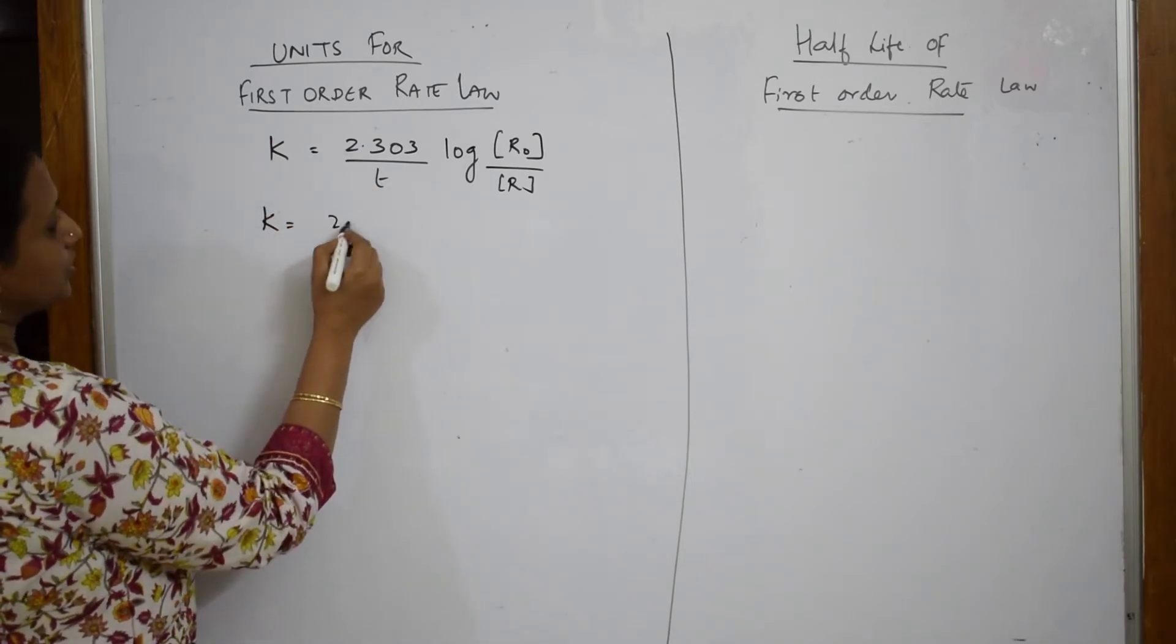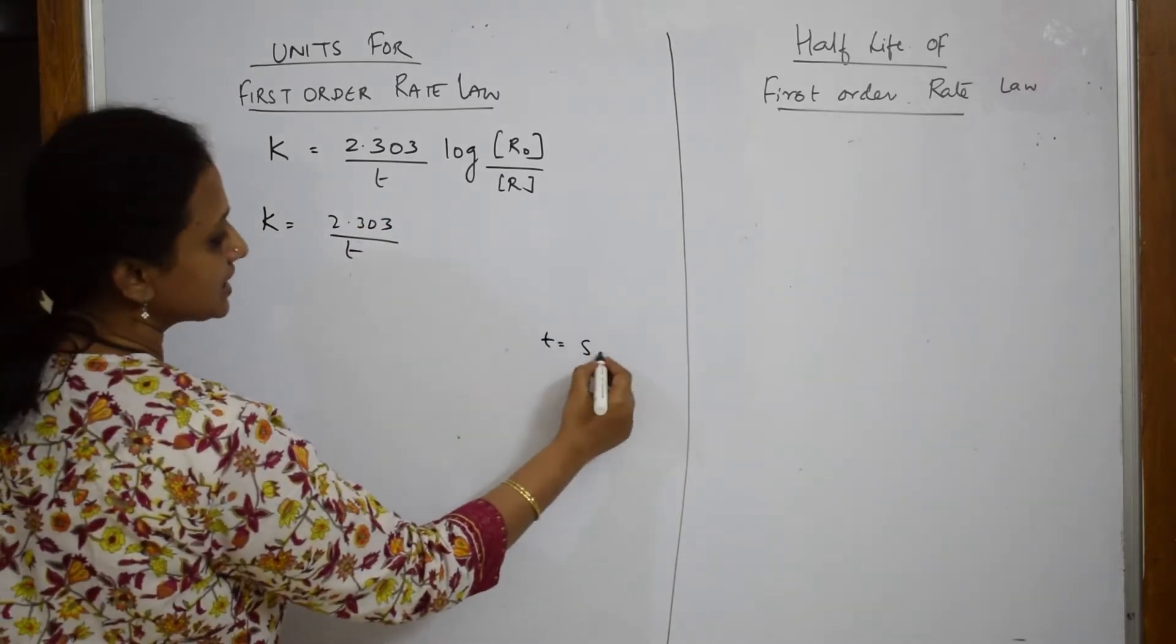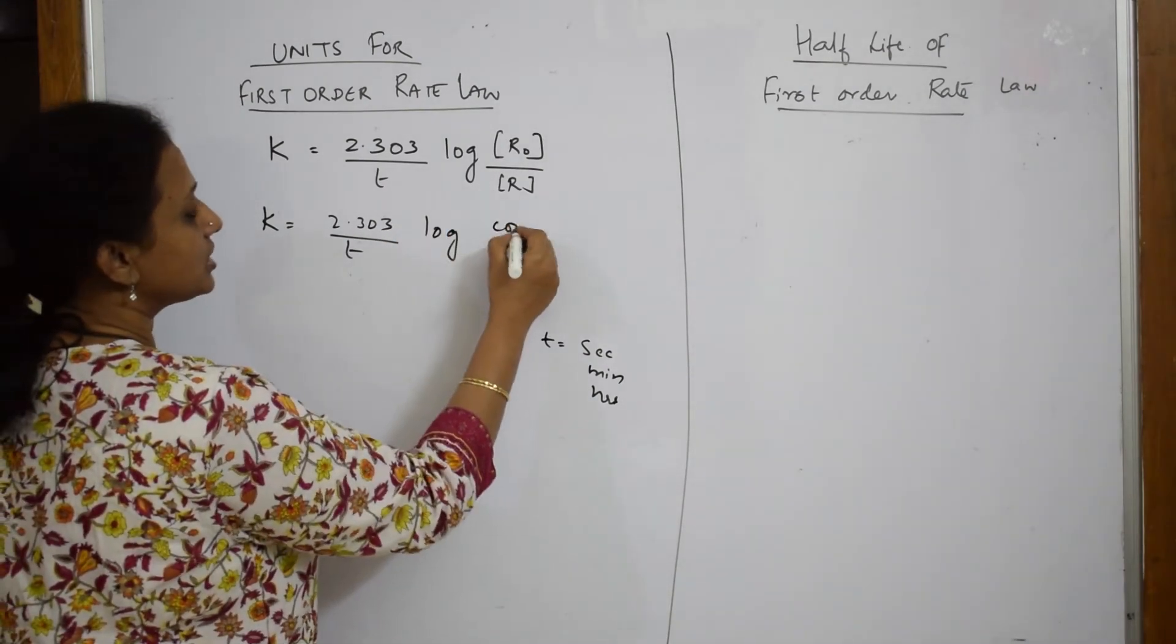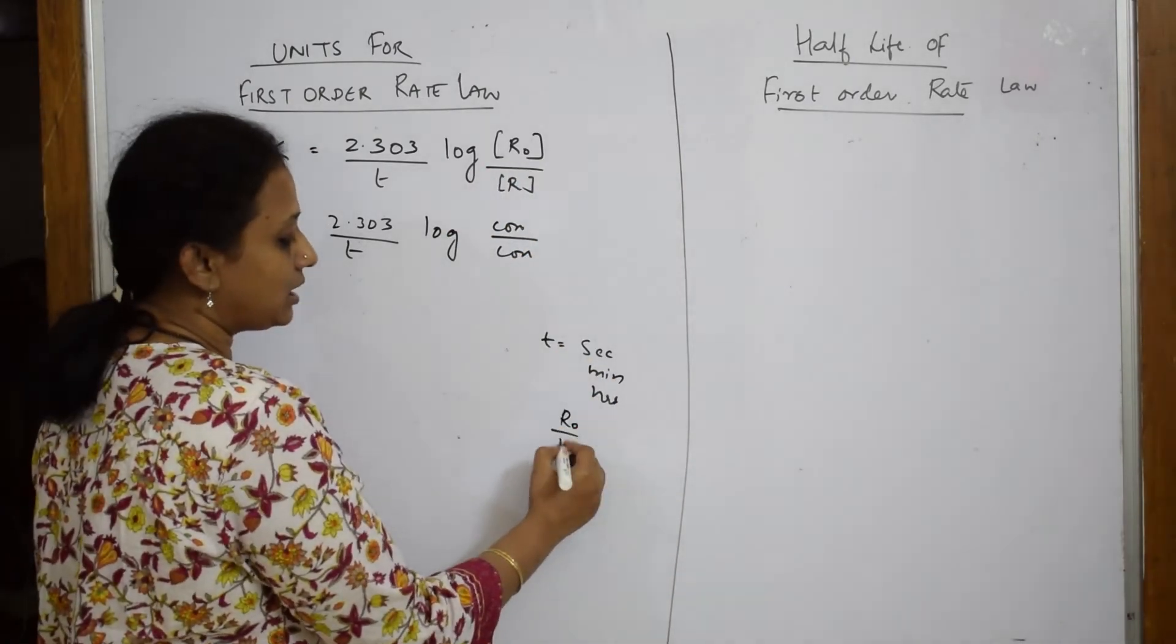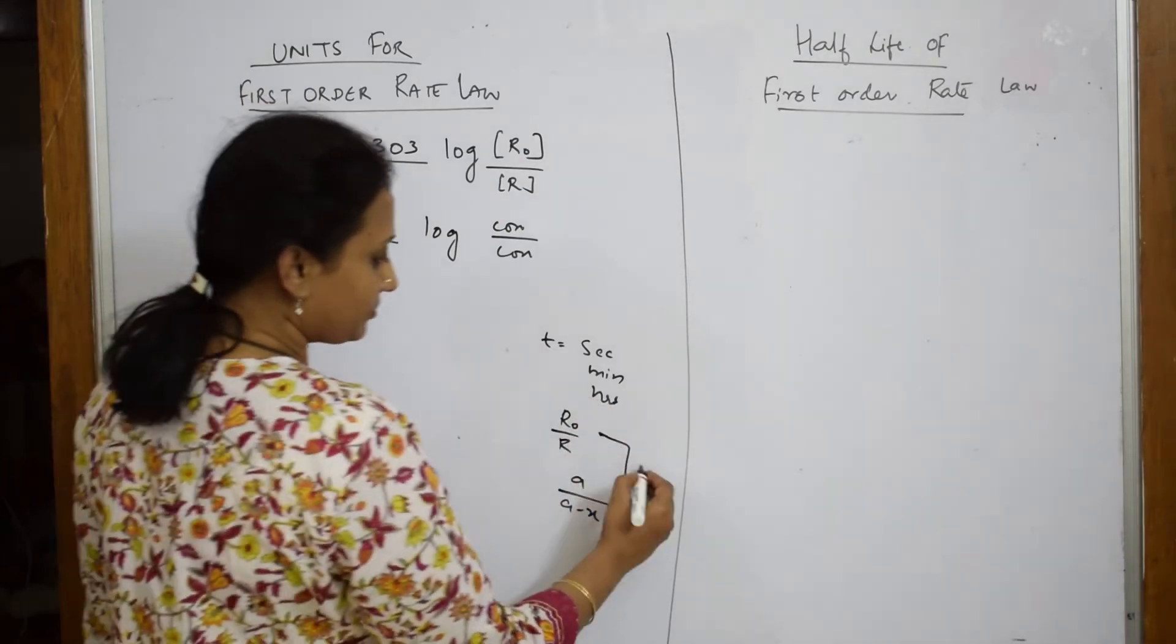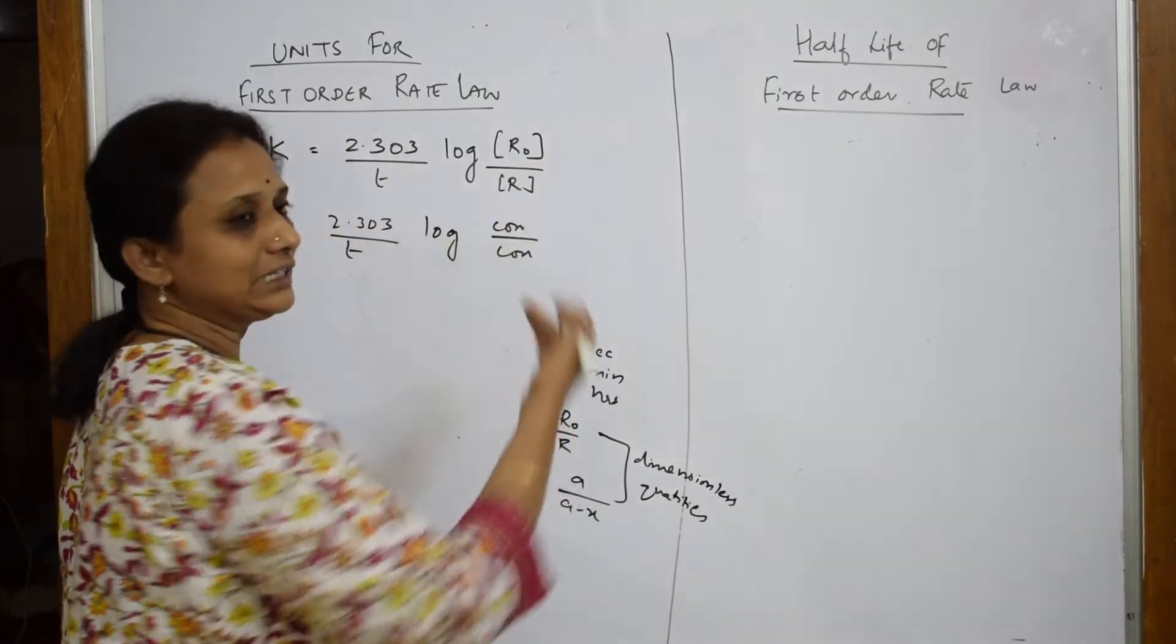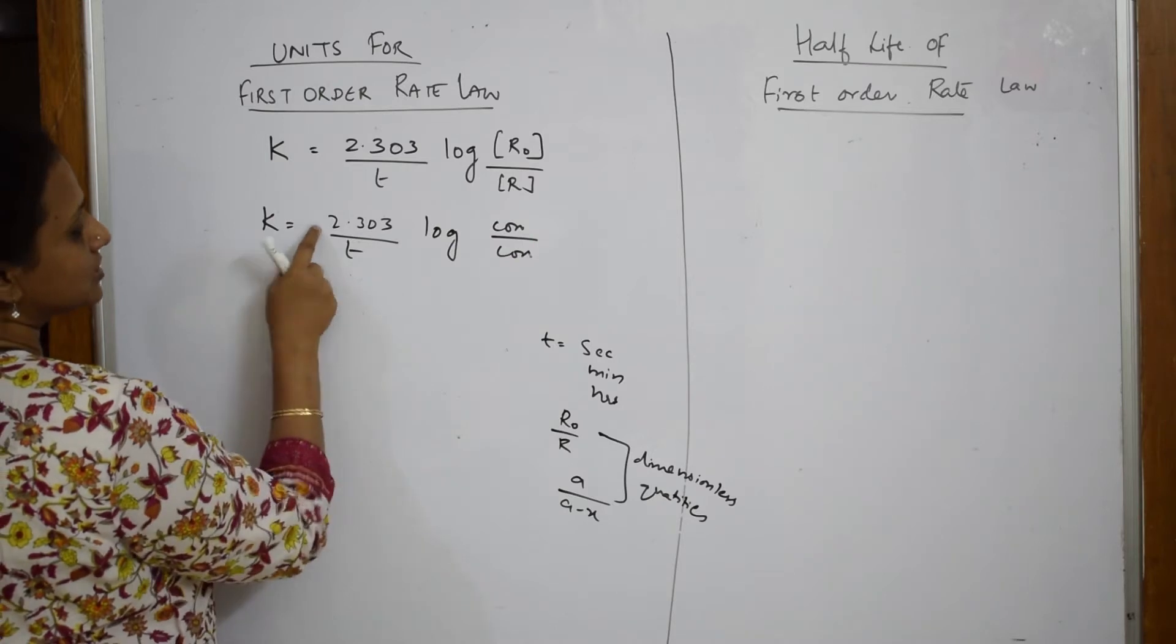What is rate constant according to what we have derived? Rate constant is equal to 2.303 divided by t log r0 by r. This is what we have got for first order rate equation. So, now let us write the units. Now, this is 2.303, okay fine. So, time can be measured in seconds or minutes or hours, isn't it? That is what it is mentioned in the form of seconds, minutes or hours.